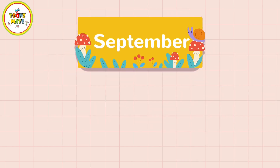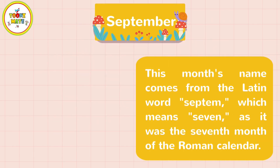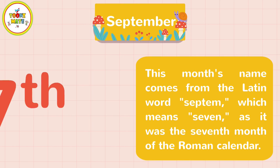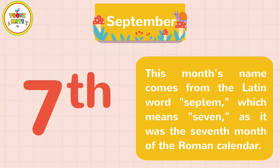September. This month's name comes from the Latin word septem, which means seven, as it was the seventh month of the Roman calendar.